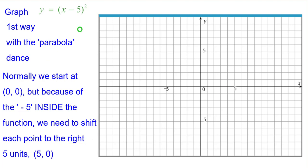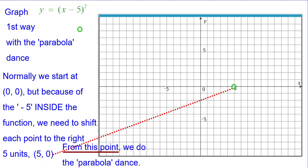So we're going to start at 5, 0. That will be our new vertex. From this point we're going to do our parabola dance, which means right 1 up 1 because 1 squared is 1. Right 2 up 4. Right 3 up 9.